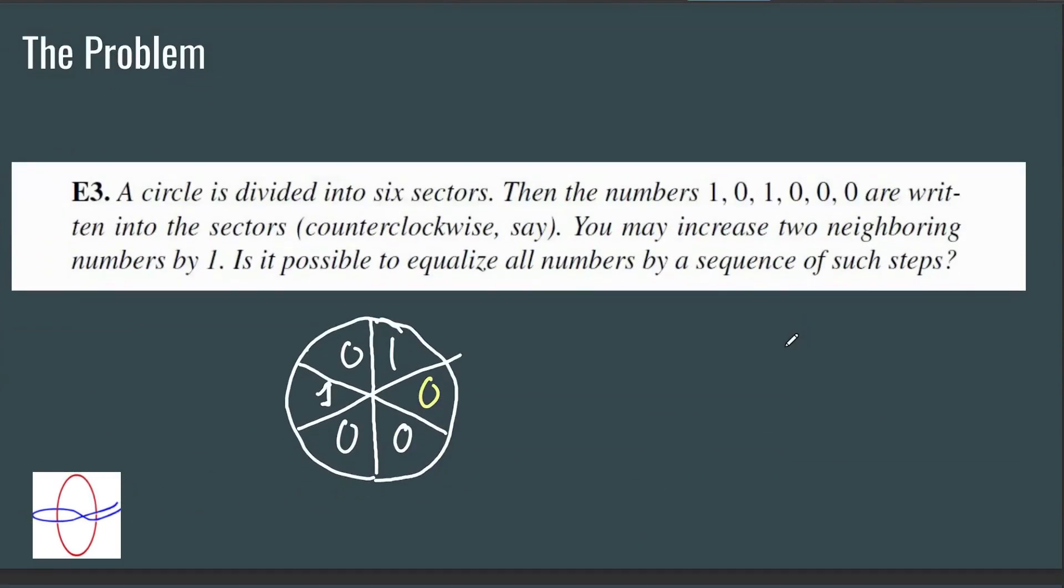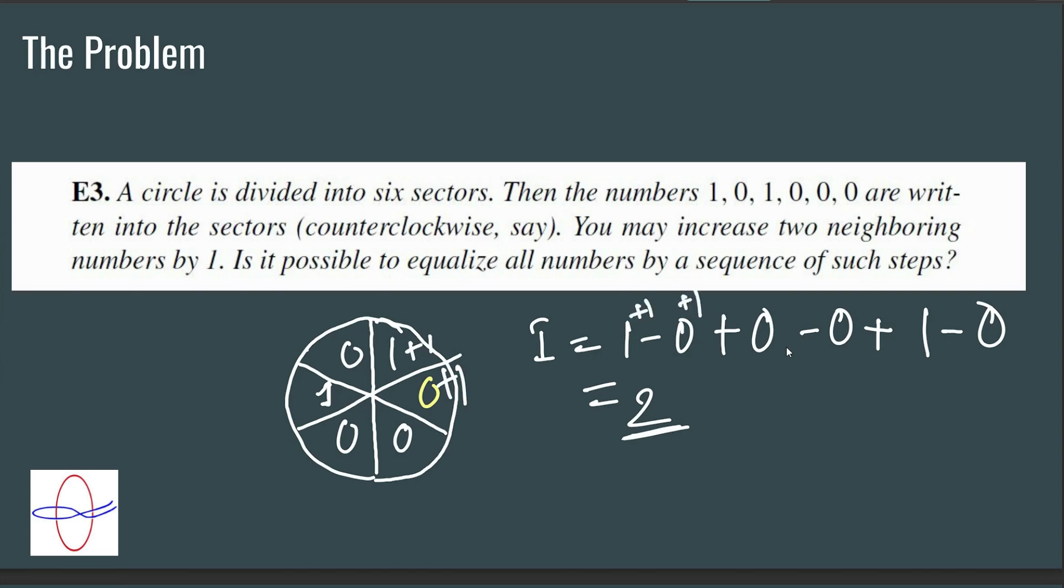Note, we can see this as an example. If we start off like this, what is the value initially of i in our initial configuration? It's 1 minus 0 plus 0 minus 0 plus 1 minus 0. Initially, it's 2. And just as an example, if we increase these two, what happens is this becomes plus 1, this becomes plus 1. So we have 2 minus 1, but this is still 1, and there's a 1 here, so the value is still 2. So do you see what's happening? The value stays the same.